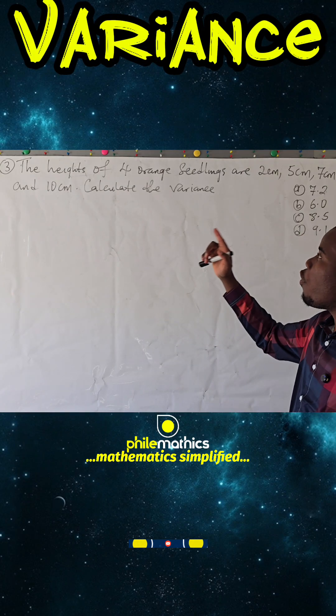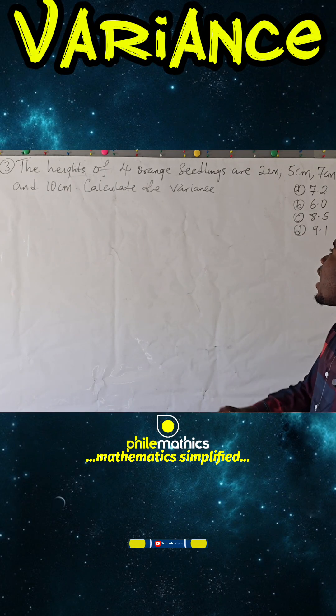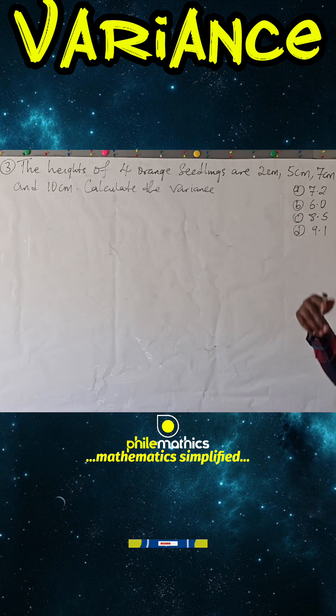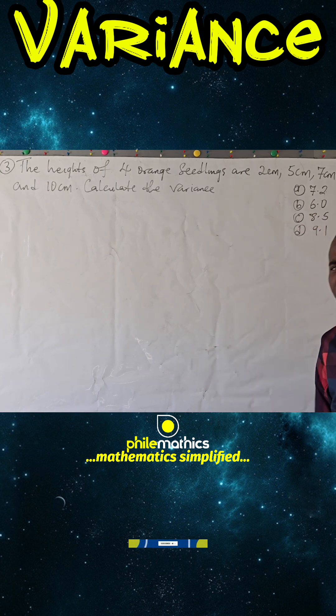The height of four orange seedlings are 2 cm, 5 cm, 7 cm, and 10 cm. Calculate the variance.